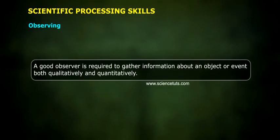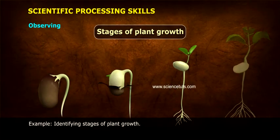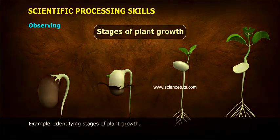Observing: A good observer is required to gather information about an object or event both qualitatively and quantitatively. Example: Identifying stages of plant growth.